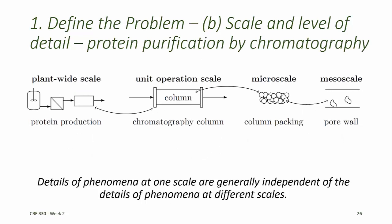As an example, consider the separation of a protein performed by column chromatography where that protein is generated in a multi-step process. The protein might be produced in a bioreactor, the effluent from which is filtered before it's sent to the chromatography column. The unit operation scale is the scale at which we might design the chromatography column.